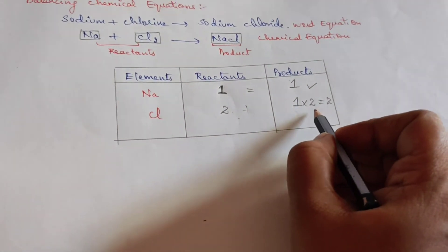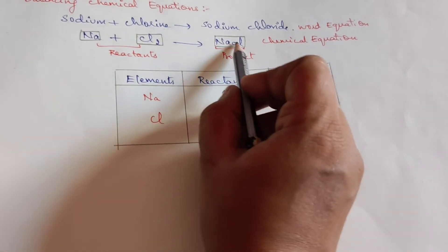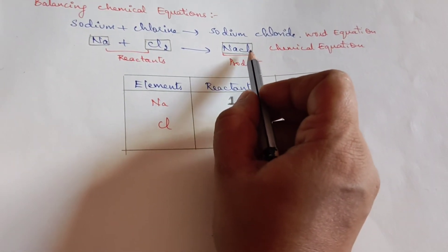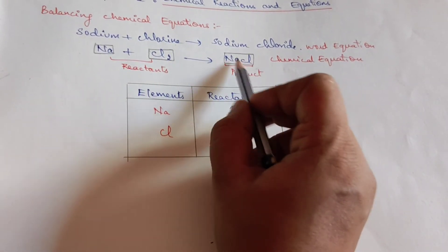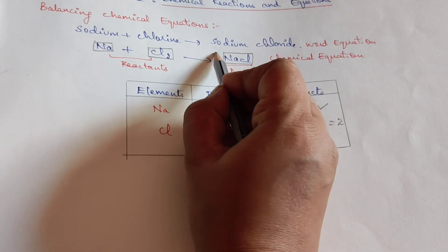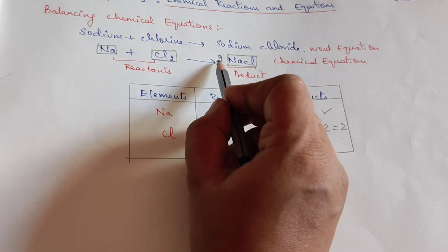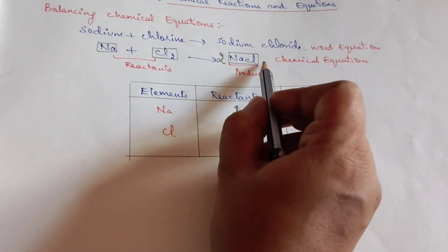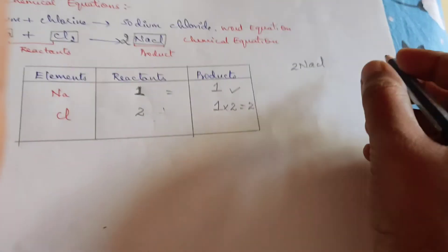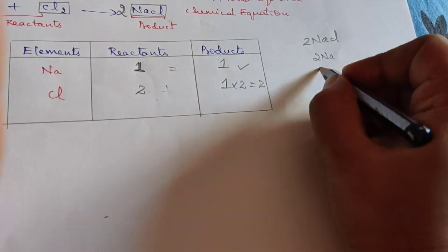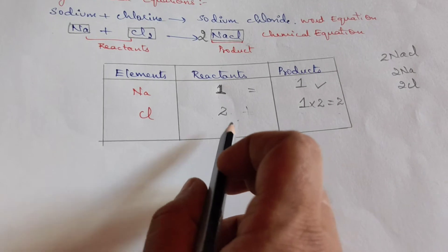Now what did we do? In product side for chlorine, we multiplied 1 by 2. So here in product side with chlorine, where do we write 2? Never write 2 down, it changes the formula of the compound. Always write in front. This is a formula which cannot be changed. In front we write it 2. 2 NaCl. 2 NaCl means 2 is given to NaCl, 2 is given to chlorine.